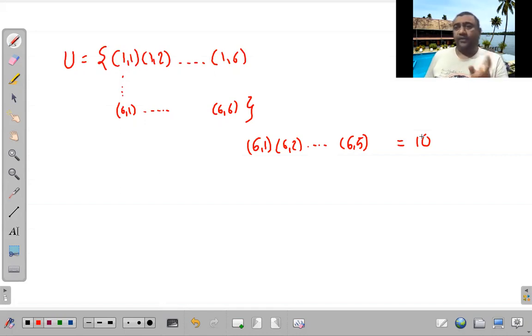Six, one. Six, two. Six, three. Six, four. Six, five. And so on. One, six. Two, six. Three, six. Four, six. Five, six. You cannot take six, six, because then there are two sixes. So how many outcomes are? 10 by 36.